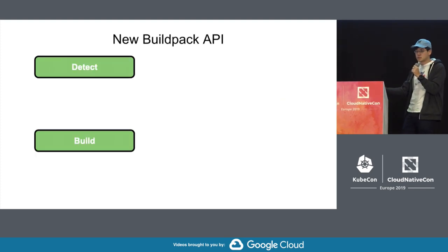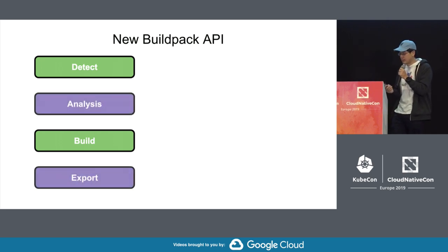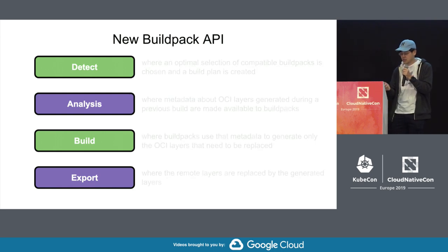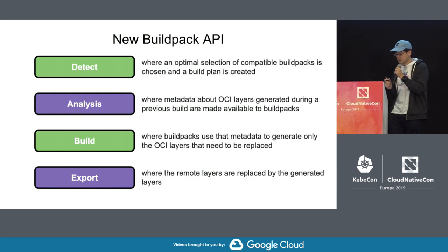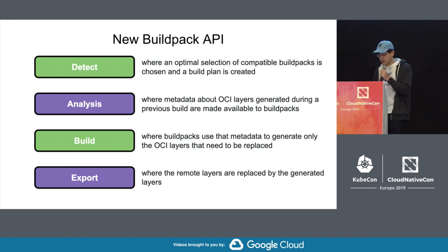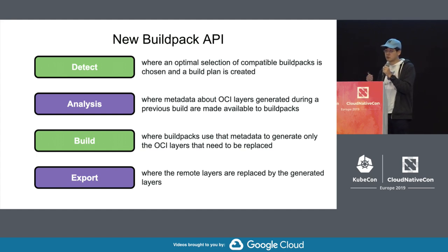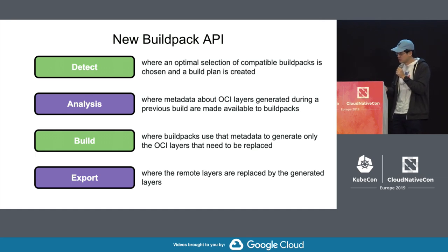If you remember the talk from yesterday, this was the Buildpack API where, as a Buildpack author, you need to implement these two executables: detect and build. With detect, the Buildpack writes code that decides if each run creates a build plan that codifies the Buildpacks that need to be run. In the build phase, this is the meat of the Buildpack that creates the different OCI layers in your resulting image, as well as metadata associated with it.